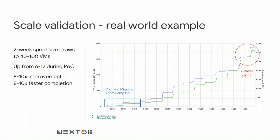This is a case study with actual measurements from a customer project. This customer migrated several hundreds of machines. As we worked with them to identify best practices and build the migration practice, we converged on an agile approach. The agile approach allowed them to increase their velocity eight to ten times, meaning at some point they were able to migrate about 150 machines in one day.